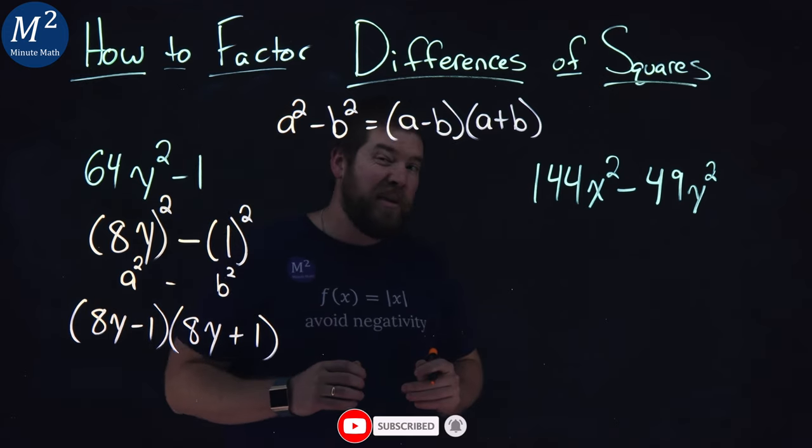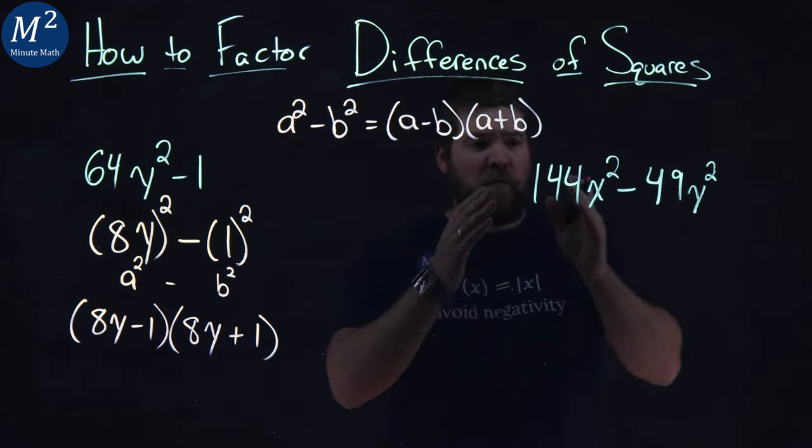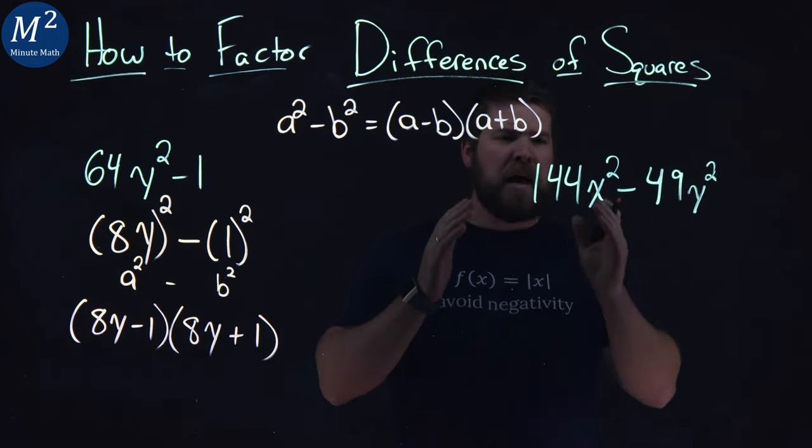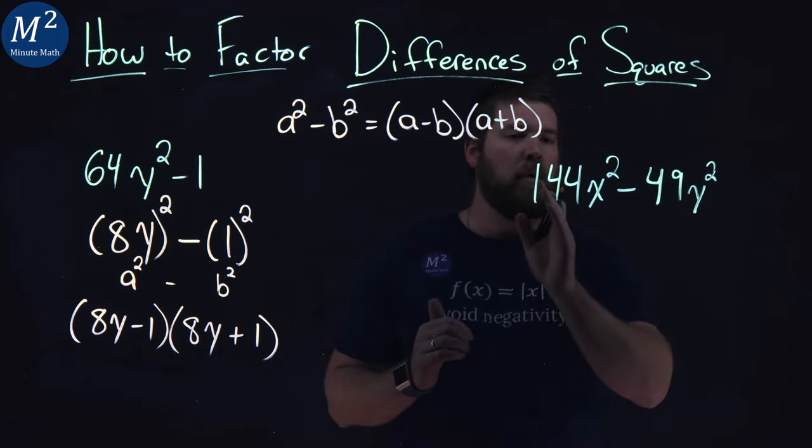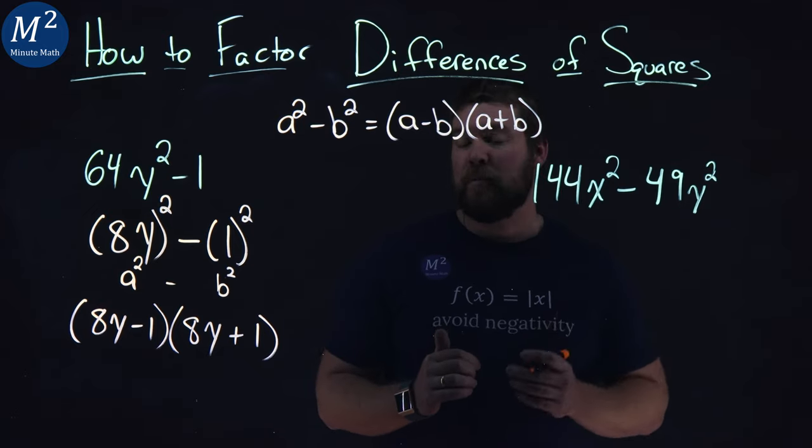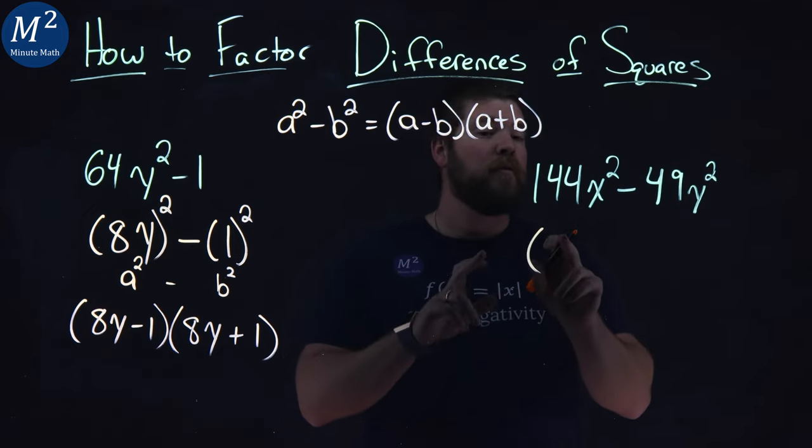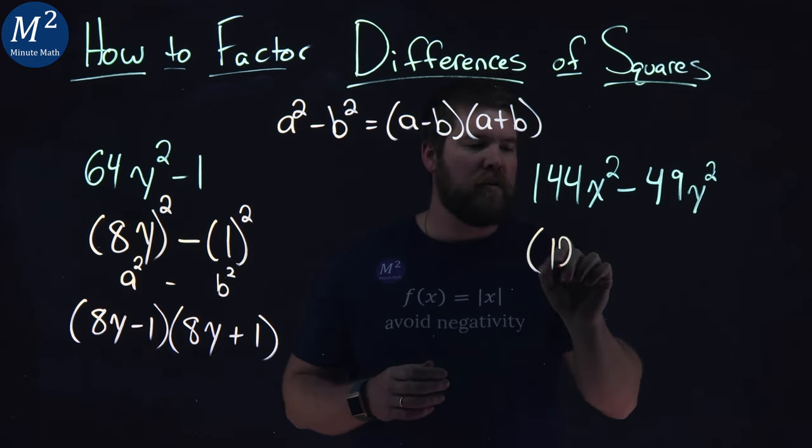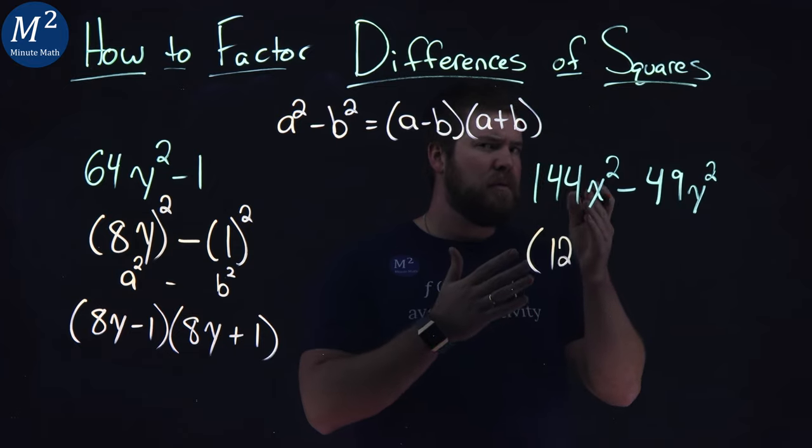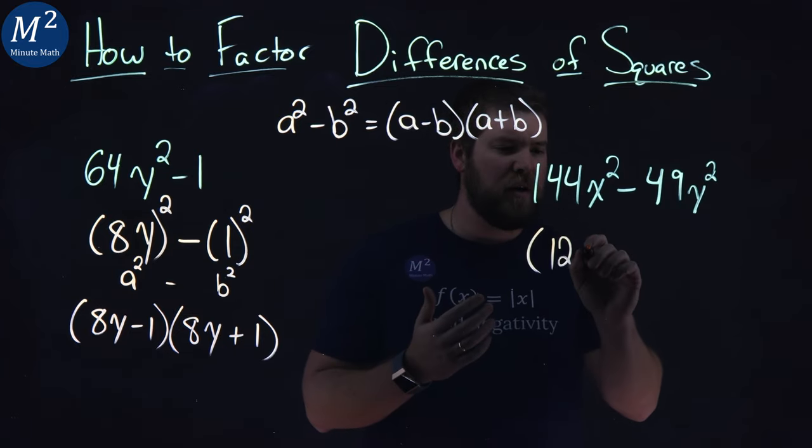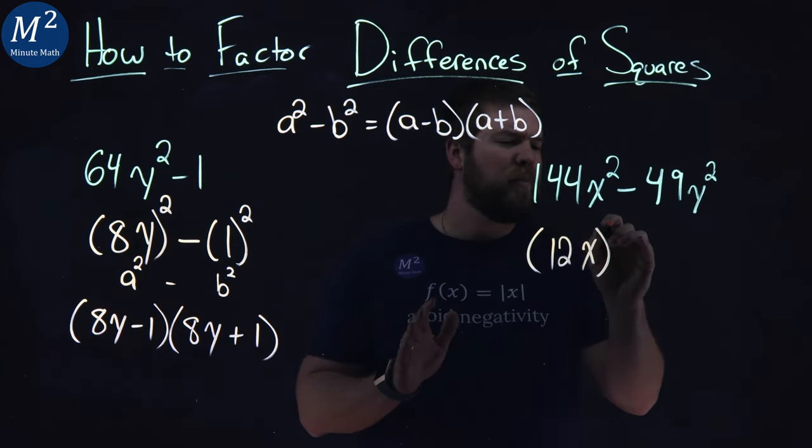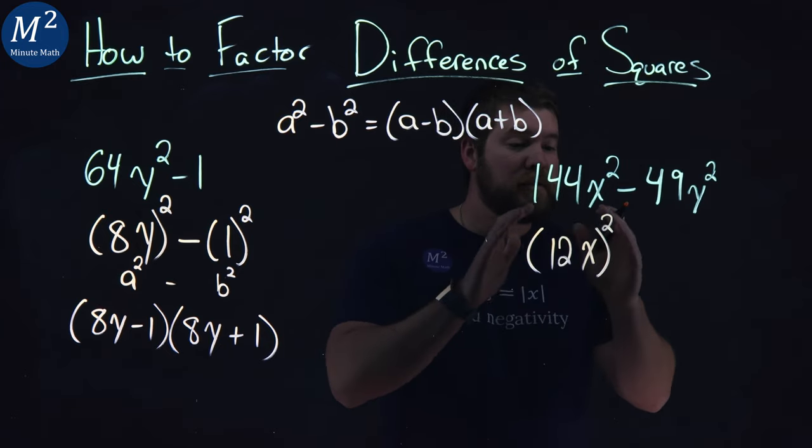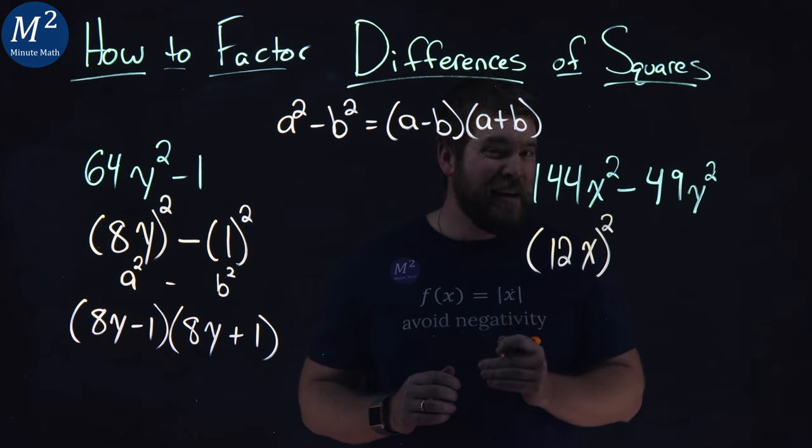So let's try another example here. We have 144x squared minus 49y squared. Again, let's take the first part, 144x squared. Well, 144, we know, is 12 squared. It's a perfect square. So I put a 12 here. And if I take down the x, well, we know x squared is x squared right here. I can write this simply as 144x squared to be 12x all squared. They are equal right there.